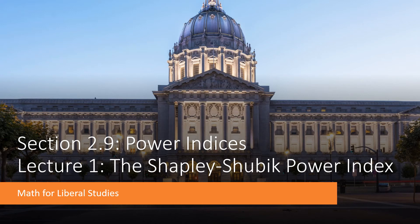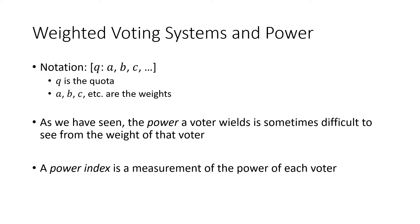This is the first video for section 2.9 on power indices. In this lecture, I'll be talking about the Shapley-Shubik power index. We're talking about weighted voting systems, where the first number is the quota — the number of yes votes needed for a motion to pass — and after the colon we have numbers listing the weights of the various voters. The actual power a voter wields isn't always obvious from their weight alone, so in this section we look at a power index, which measures the actual power a voter has in the system.